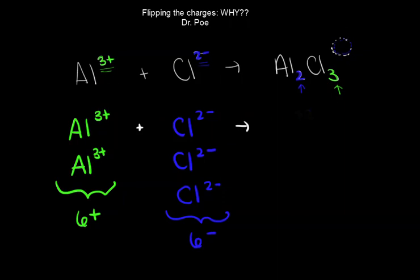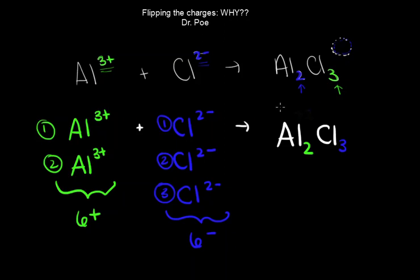We don't want any charge for this molecule. So if we were to write it out now, we get Al and we have 2 of those - molecule 1, molecule 2. For our Cls, we've got 3 of those. So the way that we denote that is with the subscript 3. Here's number 1, here's number 2, here's number 3.